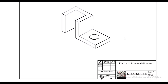Welcome back to this channel. This is AutoCAD for mechanical engineering, lesson number 31. In this lesson we'll make practice number 11 and just make this drawing here. We still talk about isometric drawing and this one is a little bit more complex as we go deeper into isometric drawing.